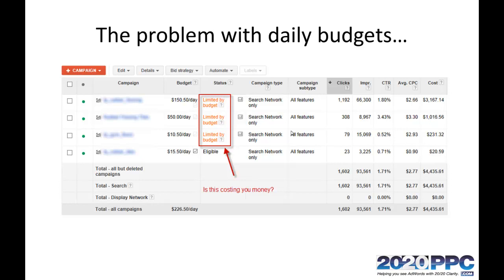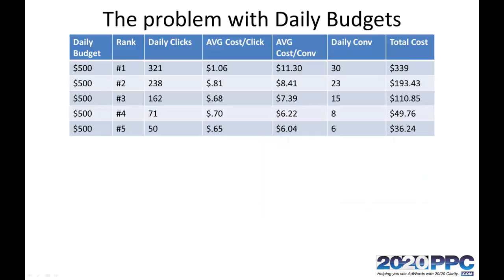Now this seems counterintuitive at first, but let's talk about what is actually happening. Here is an example of what your metrics might look like if you didn't have a cap on your daily budget. You're probably doing very well, you're getting tons of clicks, you're ranked in the number one position, and you're getting an average of 30 conversions a day. And that's costing you about $330.